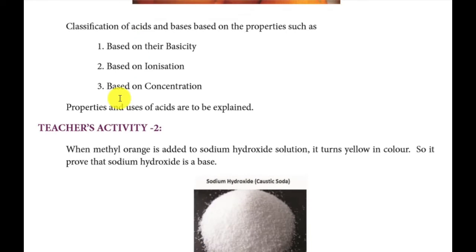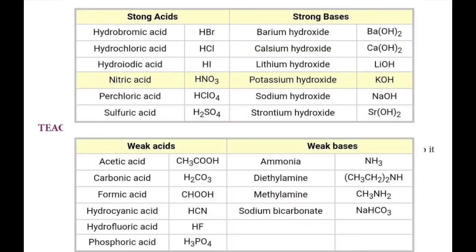Next category: based on ionization. First, acids that are completely ionized are called strong acids. Example: hydrochloric acid and sulfuric acid. HCl completely ionizes to H+ and Cl−. H2SO4 ionizes to 2H+ and SO4²−.